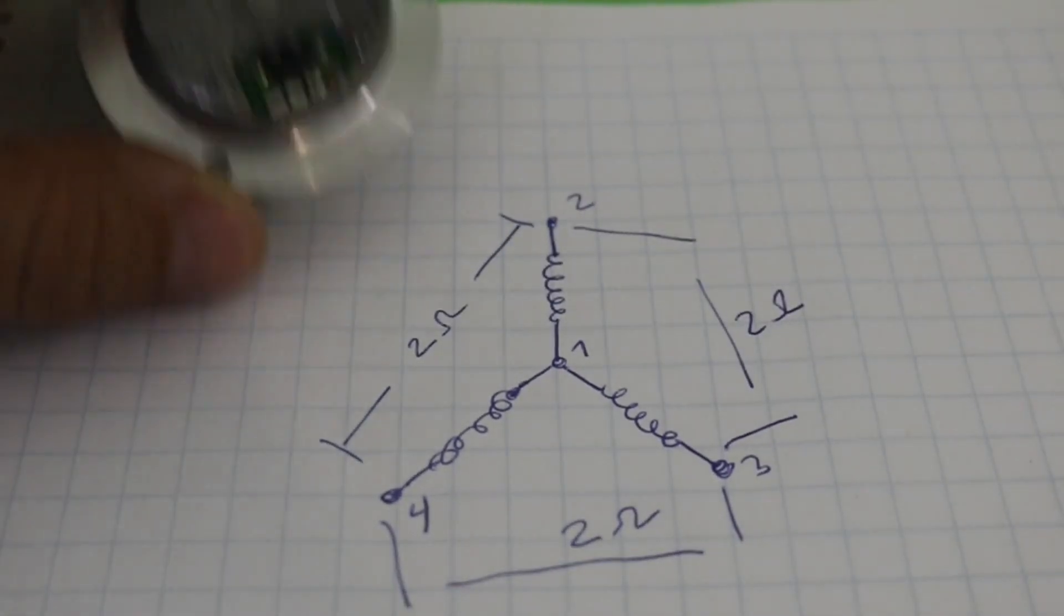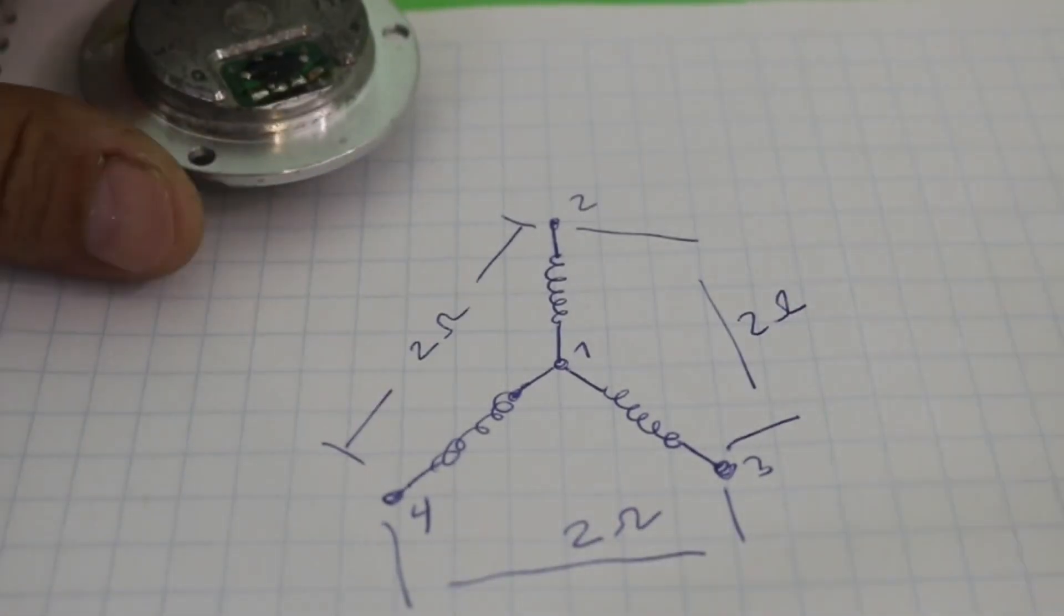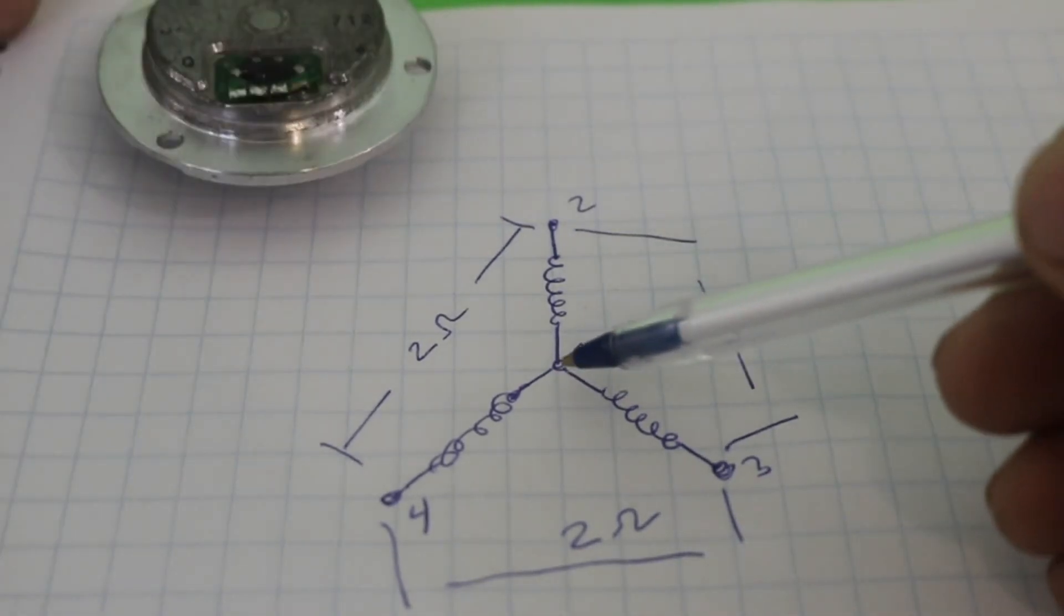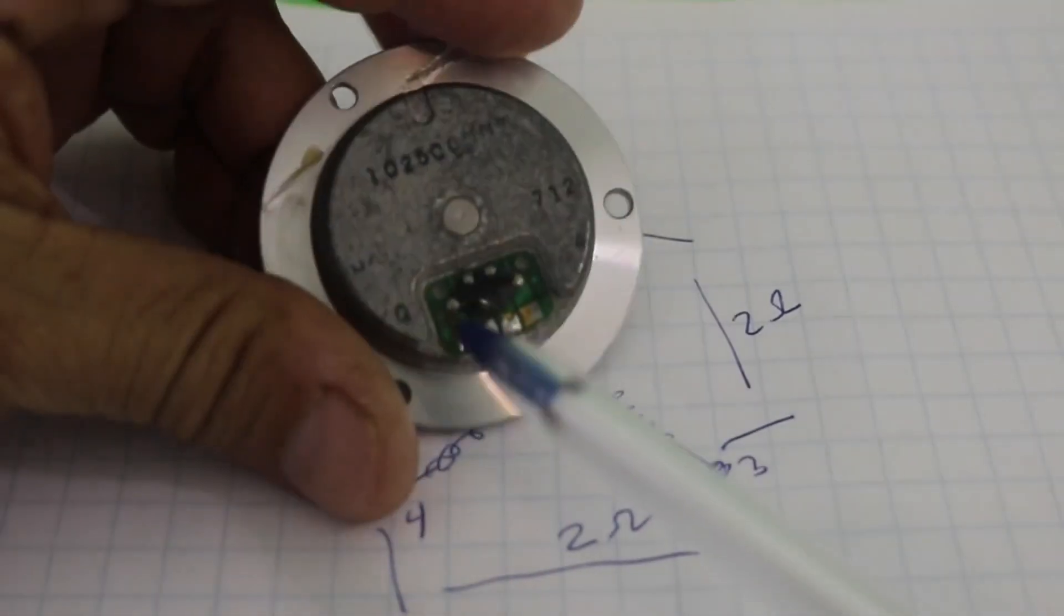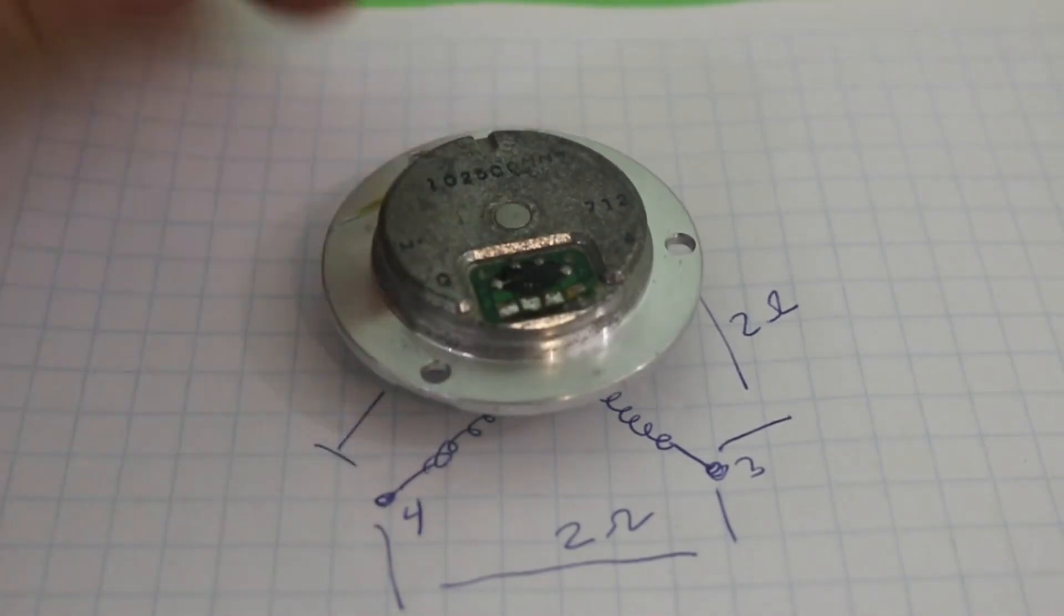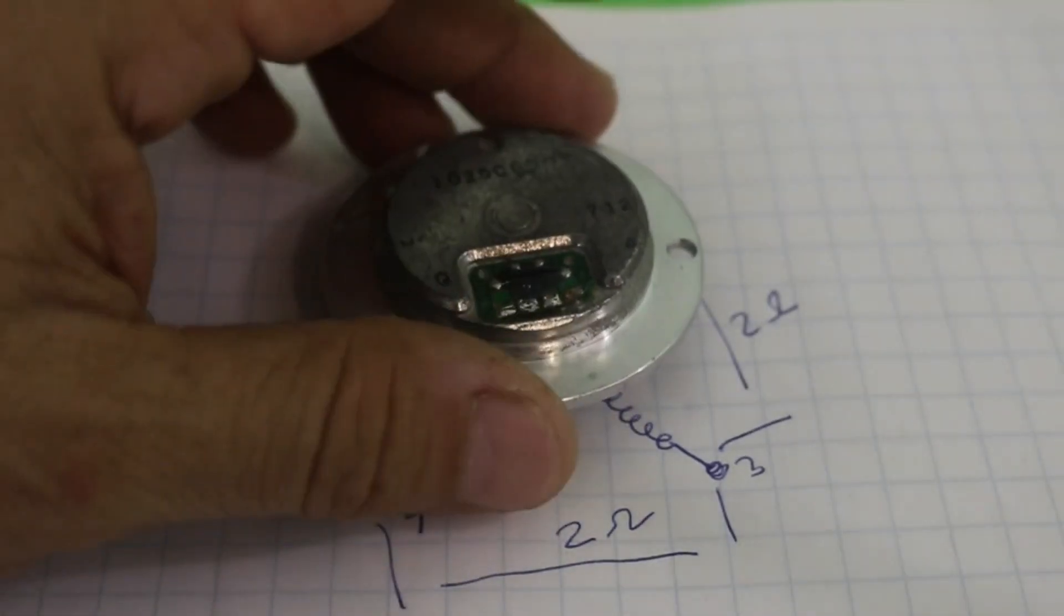Therefore, the center point will be that terminal that has a reading of 1 ohm with the other 3. Normally, it is the first one, but not always, so you must do this check.